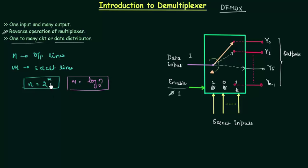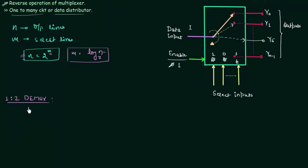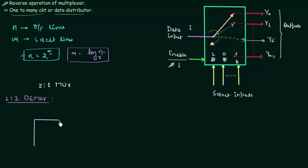So when you know the select lines and you want to know the number of output lines you will use n = 2^m, and when you have the output lines and you want the select lines then you will use m = log base 2 of n. Now we have all the knowledge to start with 1-to-2 demux. As the name suggests, we have single input and 2 outputs. This is the reverse operation of a 2-to-1 mux, so let's find the circuit for 1-to-2 demux.